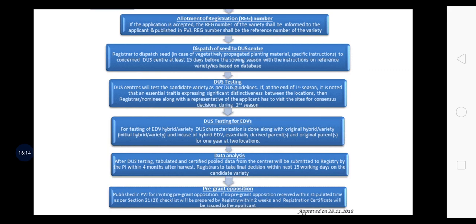Pre-grant opposition: published in PVJ (Plant Varietal Journal) for inviting pre-grant opposition. If no pre-grant opposition is received within the stipulated time as per Section 21(2), a checklist will be prepared by the registry within two weeks and a registration certificate will be issued to the applicant. This ends the whole procedure.